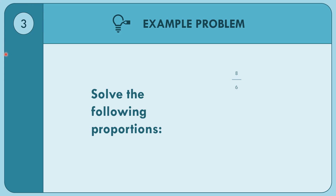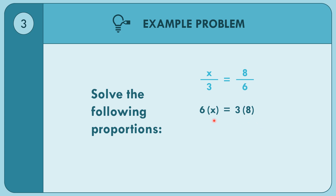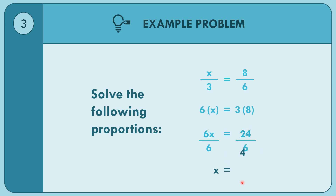Example 3: X over 3 equals 8 over 6. Using the cross product property: 6 times X equals 3 times 8, so 6X equals 24. Dividing both sides by 6, X equals 4.